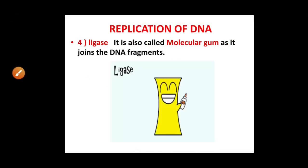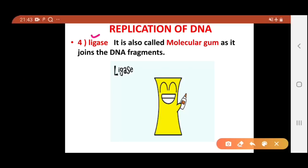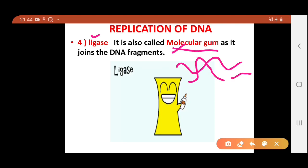The fourth enzyme required is ligase — it is called the molecular gum. Just like gum joins two things together, ligase joins cut molecules of DNA. If there is a cut in the DNA double strand, ligase seals that cut. This is an important MCQ point: if a question asks which enzyme is called molecular gum, the answer is ligase.